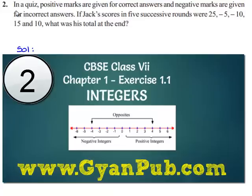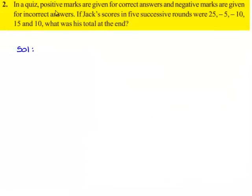Now, we will see the second question. The question is, in a quiz, positive marks are given for correct answers and negative marks are given for incorrect answers. If Jack's scores in 5 successive rounds were 25, minus 5, minus 10, 15 and 10, what was his total at the end?